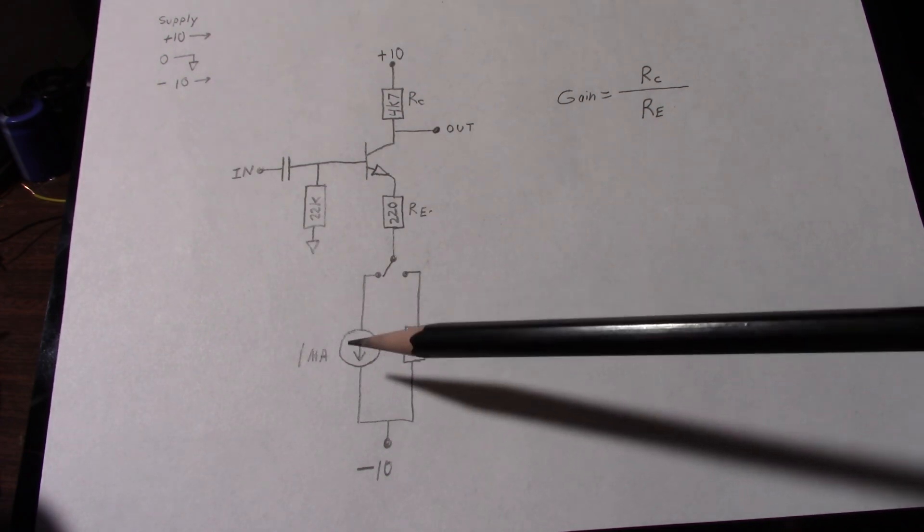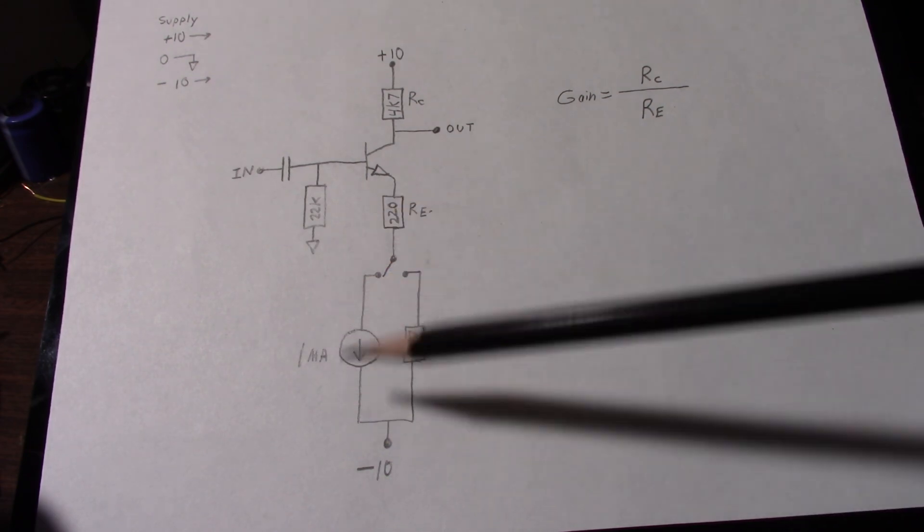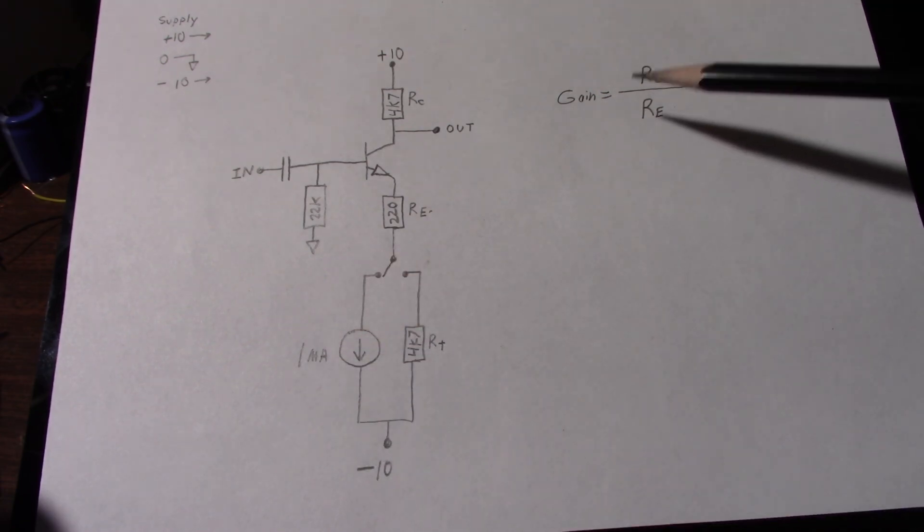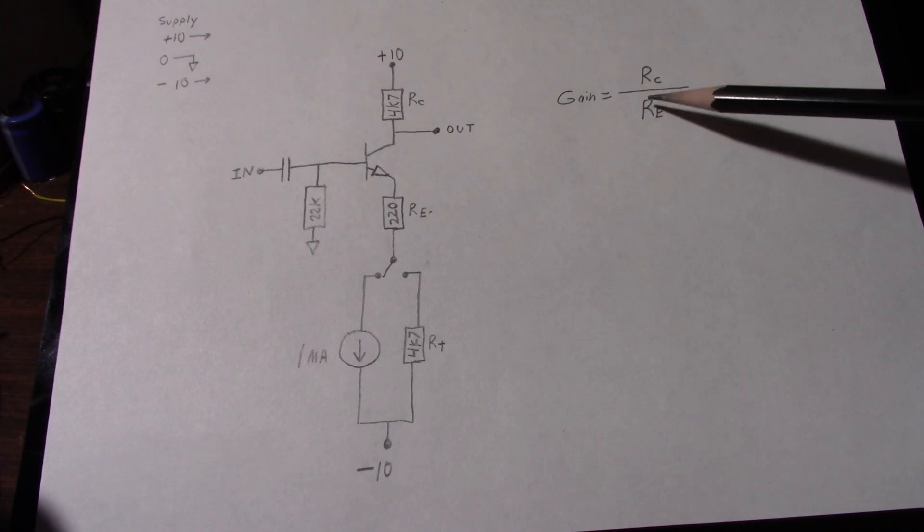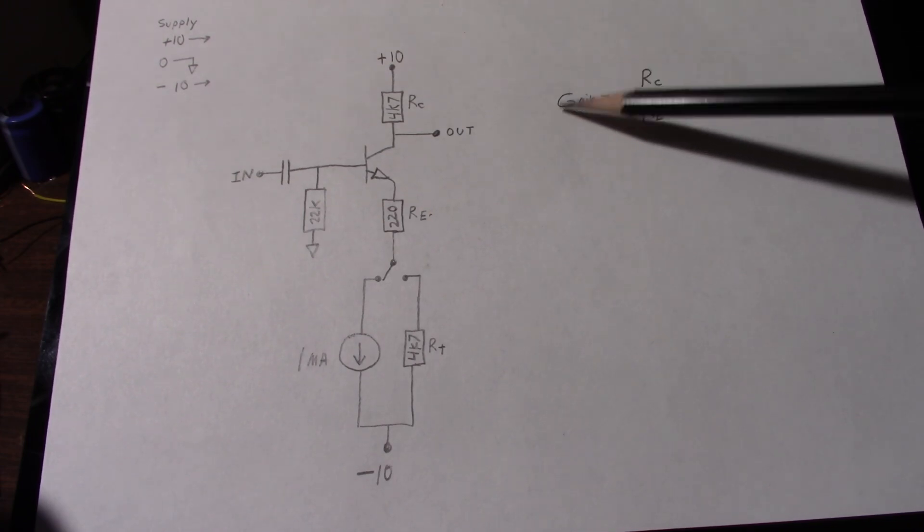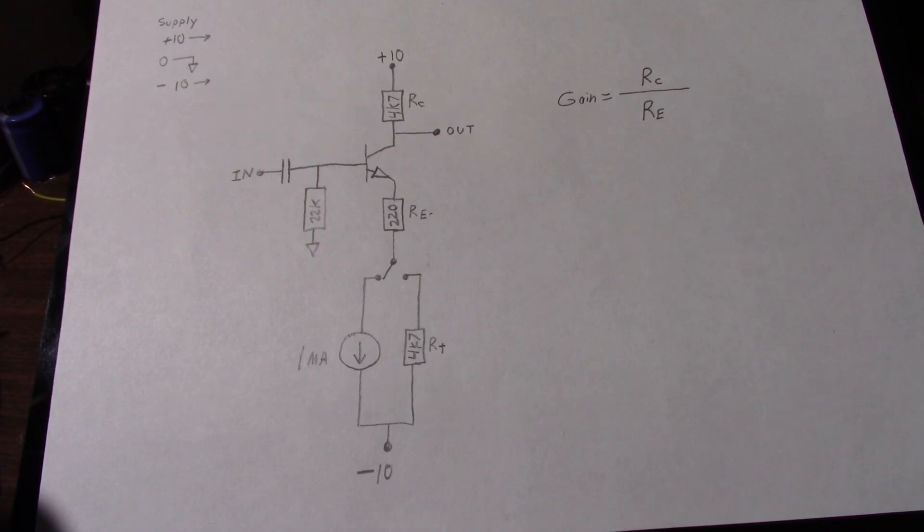Now when you have a constant current source in, recall that this has a very high impedance. In theory, it's infinite. And when you have a very high value in the denominator, it's going to make this value, the gain, very small. Okay, so enough yakety yak. Let me get you pointed to the scope and we'll probe around the amplifier.